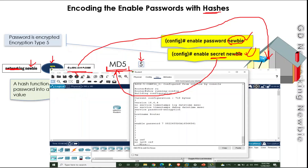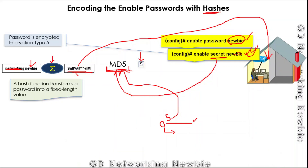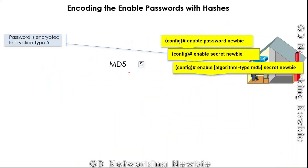When you run 'show running-config' after using 'enable secret', you see a hash value indicated by '5' instead of '7'. You can also explicitly specify MD5 using the 'enable algorithm-type md5 secret' command — both commands are equivalent, as the algorithm-type portion is optional.